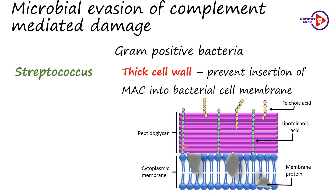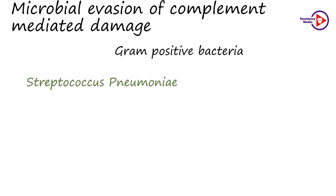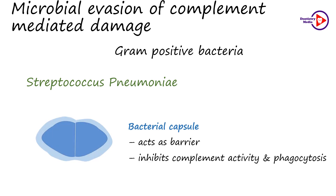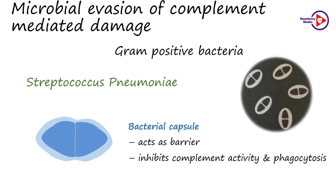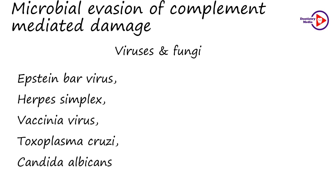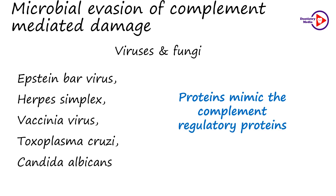In gram-positive bacteria such as Streptococcus, the cell walls are very thick, thereby preventing the insertion of the MAC complex. The peptidoglycan layer of gram-positive bacteria is very thick, which prevents insertion of the MAC complex. Streptococcus pneumoniae has a polysaccharide capsule which completely encloses the bacteria and is a dominant structure. It plays a key role in its virulence because it acts as a physical barrier, inhibits complement activity, and prevents phagocytosis. This capsule can be demonstrated as a clear halo in an India ink preparation. Viruses, fungi, and protozoans such as Epstein-Barr virus, Herpes simplex, Vaccinia virus, Trypanosoma cruzi, and Candida albicans contain proteins which mimic mammalian complement regulatory proteins, thereby inhibiting the complement cascade.